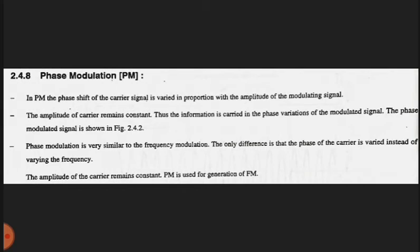The last type is phase modulation, PM. In PM, the phase shift of the carrier signal is varied in proportion with the amplitude of the modulating signal. The amplitude of the carrier remains constant.